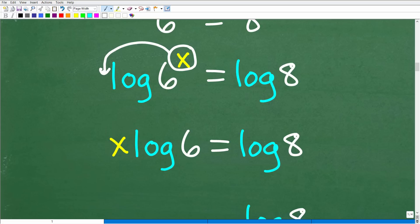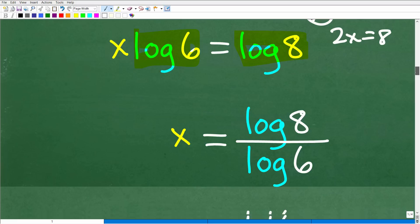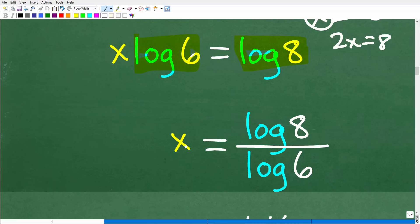So this is effectively, right here, this is just a number. x times some number is equal to another number. I mean, this is like basic algebra stuff. Like x times 2 is equal to 8. Now, of course, I would write that as 2x is equal to 8. But to solve for x, all I need to do is divide both sides of the equation by what? In this case, log 6. So x would be equal to log 8 divided by log 6.